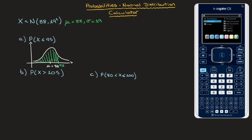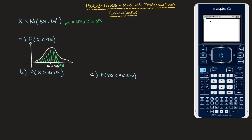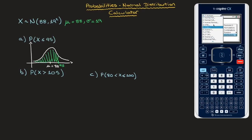Now to find that area, we go to the calculator. On the calculator here, we can see that I'm on the home screen of my TI Nspire CX. The first thing I'm going to do is in the scratch pad, click on calculate. The function I need is the normal CDF function. To find it, I click on menu, select the fifth option — probability — then the fifth option again — distributions. The normal CDF is the second option, so I click on that.